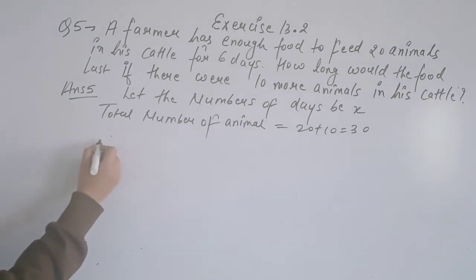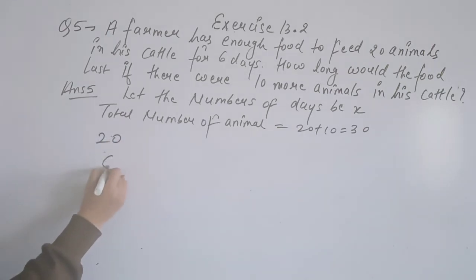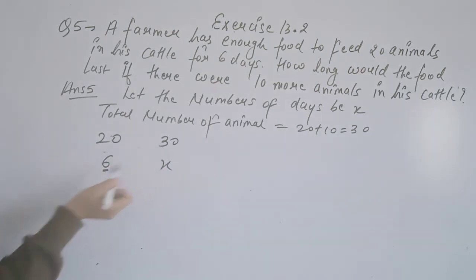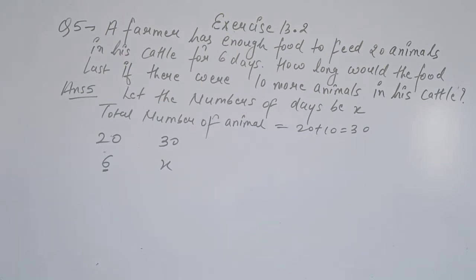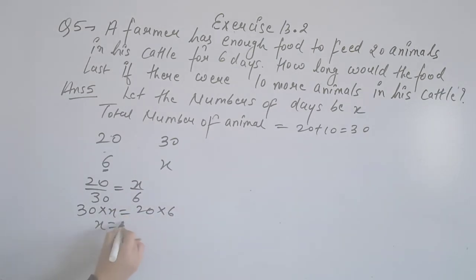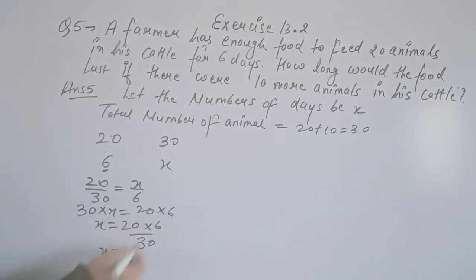So 20 animals can feed for 6 days, and 30 animals can feed for x days. The number of animals and the number of days are in inverse proportion. So 20 divided by 30 equals x divided by 6. We get 30 × x = 20 × 6, so x = 20 × 6 ÷ 30 = 4. The food will last for 4 days.